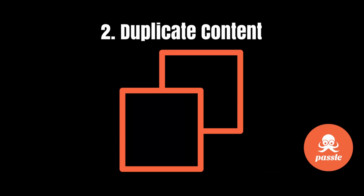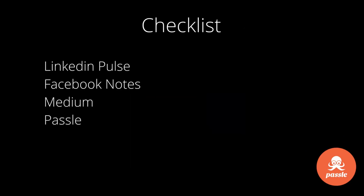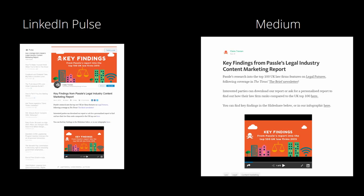The second thing is duplicating content. If you've written a blog, don't limit yourself to just having it on that blog — share an extract on LinkedIn Pulse, Facebook Notes, or Medium with a 'read more' link back to your website. Linking back to your website is the key thing. Here's an example of a LinkedIn Pulse post and a Medium post — exactly the same content, but it has a bigger chance of reaching a different audience.